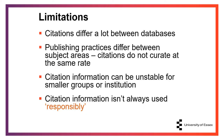There are also other limitations to using citations. Firstly, the way databases index their content affects citations. As mentioned, citation counts are likely to be much higher in Google Scholar than Scopus. In addition, publishing practices differ — for example, in economics there are a lot of working papers. These would be picked up by Google Scholar, but not Scopus. League tables don't consider this, and therefore some subject areas are not fairly represented in league tables.